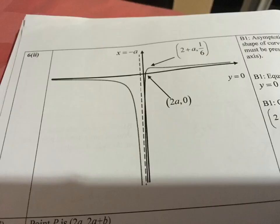Let me show you the actual graph. This is how the actual graph of 1 over f(x) should look. Your original intercept becomes the asymptote, and the asymptote becomes the intercept. To get the 3 marks, you must have the correct intercept, the correct asymptote, and the correct shape. If you do not get any of these, you will lose marks.